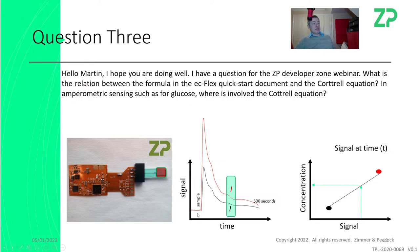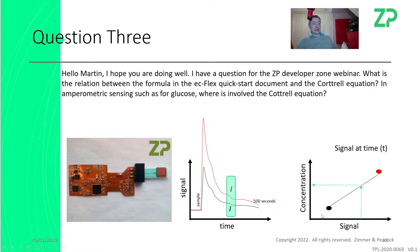They choose five seconds because their assay is very soluble — it solubilizes into the sample quickly, and a diabetic doesn't want to wait more than five seconds. So they optimize for both: is my signal strong enough, and will the customer wait that long? In the factory, they make a batch of electrodes, calibrate some of them, and produce a batch calibration. That calibration is then shipped with the product so that when used on an unknown sample, the device looks up the signal against the calibration curve to reveal concentration.